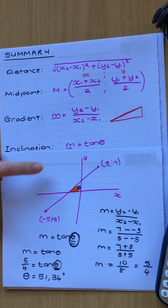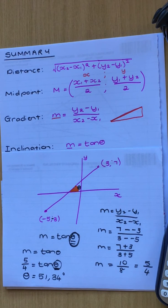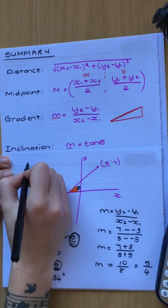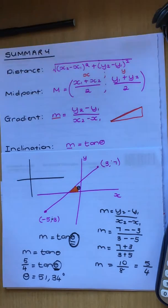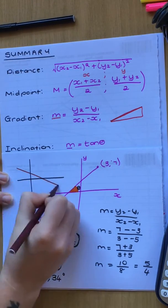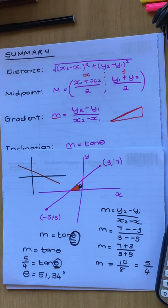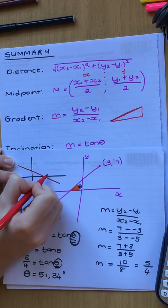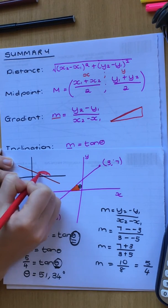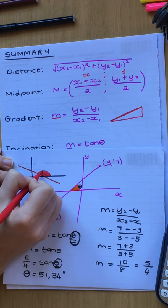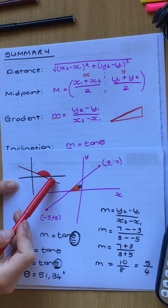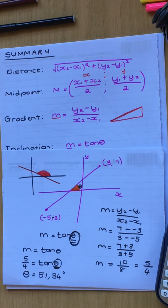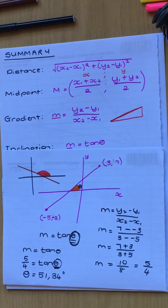Sometimes they'll give you the angle and you calculate the gradient by plugging it in. Also important: the angle of inclination always goes clockwise. So if the line goes this way, the angle of inclination is not the small angle — it's the whole angle from the x-axis going clockwise up to the line. So make sure that you get the reflex angle. When I get to proper exam examples I will show you what to do.